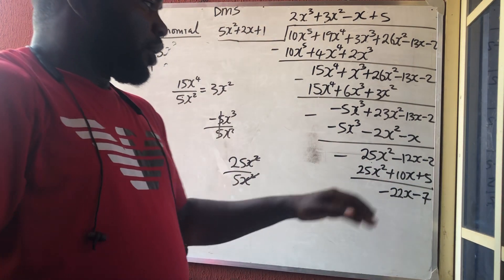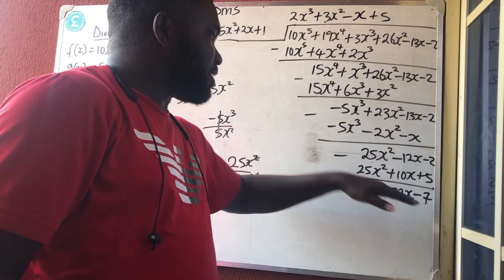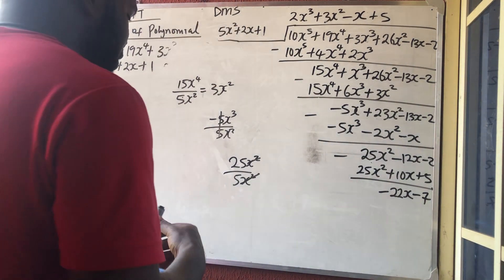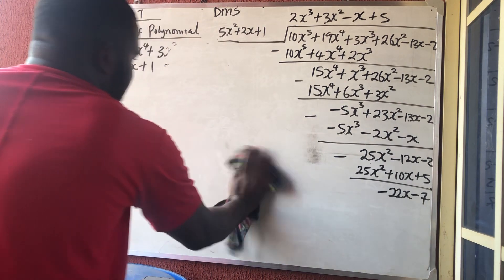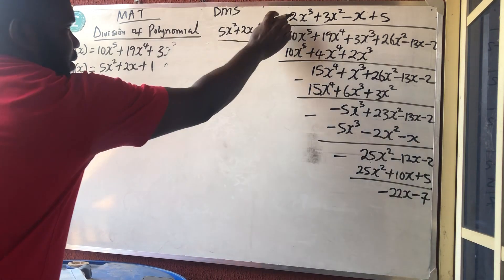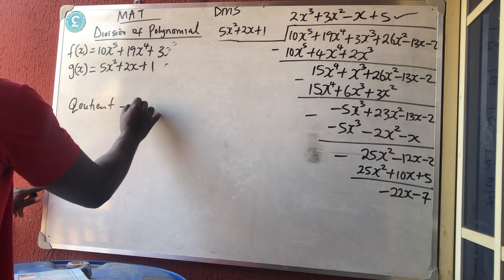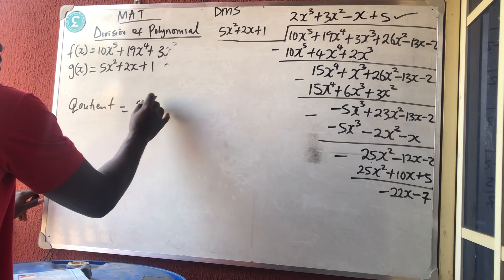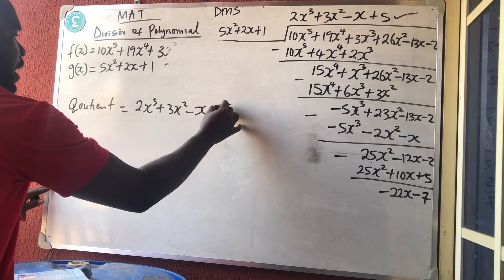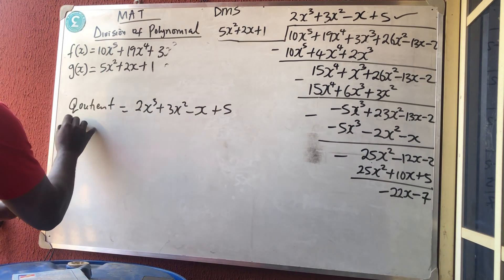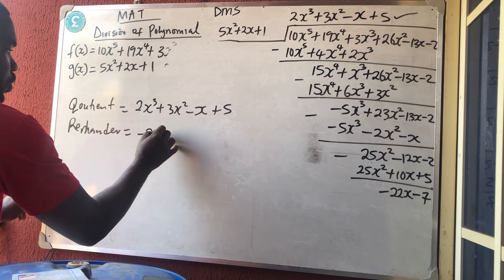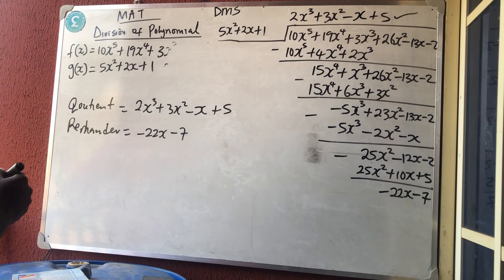Now check: the remainder's highest power is x¹, while the divisor's highest power is x² — so the remainder is now less than the divisor. We stop here. The quotient is 2x³ + 3x² − x + 5. If they ask for the remainder, the remainder is −22x − 7.